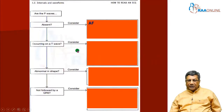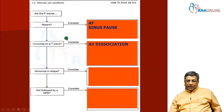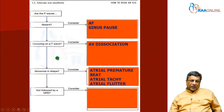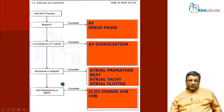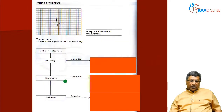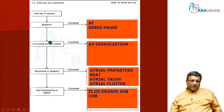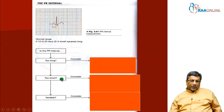When P waves are absent, it can be atrial fibrillation or sinus pause. If P waves are occurring on a T wave or the ST segment, you are most often dealing with atrioventricular dissociation. If the P wave is abnormal in shape, consider atrial premature beat, atrial tachycardia, or atrial flutter, where depolarization originates from an atrial ectopic pacemaker. If the P wave is not followed by a QRS complex, suspect atrioventricular block — either third degree (complete heart block) or second degree AV block.